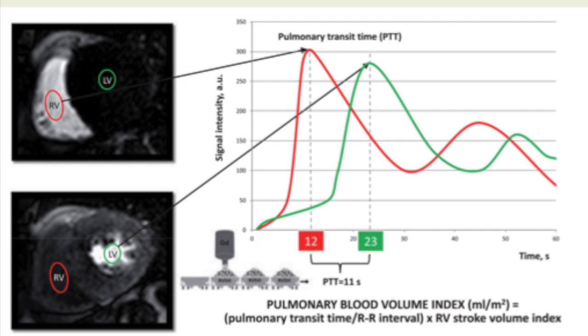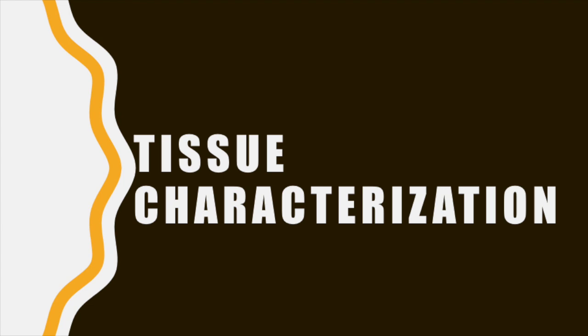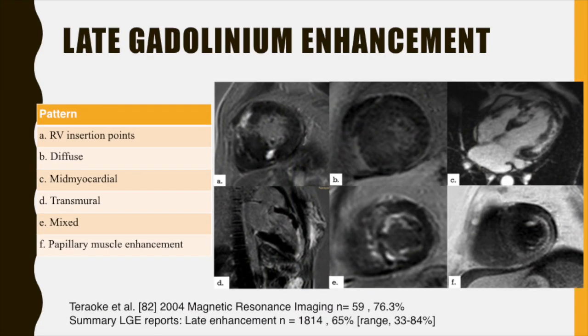A very important application of CMR in HCM is tissue characterization for the presence of myocardial fibrosis. Late gadolinium enhancement sequences are obtained to identify myocardial fibrosis. In our study of about 100 HCM patients, various patterns of late gadolinium enhancement were found: Image A shows RV insertion point enhancement; Image B shows diffuse myocardial enhancement; Image C shows mid-myocardial LV wall enhancement; Image D shows transmural enhancement in the inferior wall; Image E shows mixed subendocardial mid-myocardial LV enhancement; and Image F shows papillary muscle enhancement.